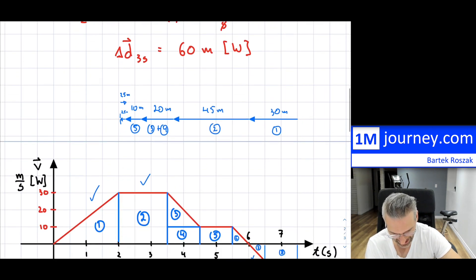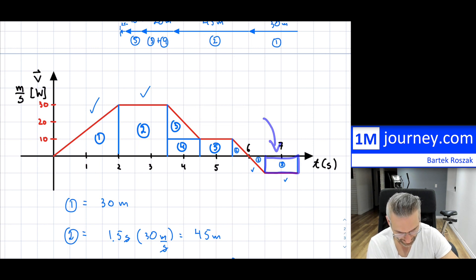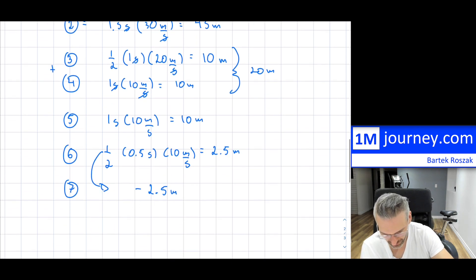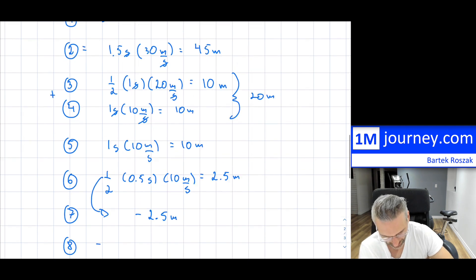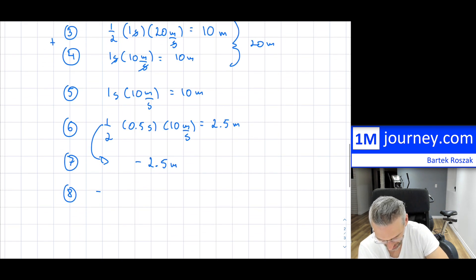And lastly, from here to here is shape 8. That's for one second, and it's actually the same box as number five.